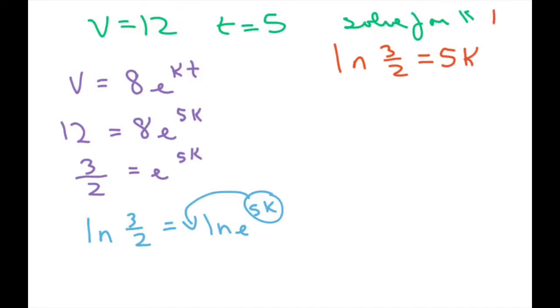Remember, ln of e is 1. So we'll just leave it like that. And then solve for k. So we have k equals 1 fifth ln of 3 halves. Or you can just put this over 5.